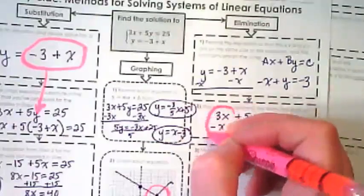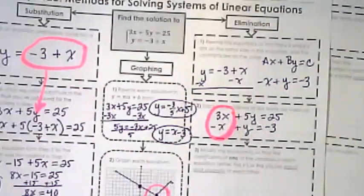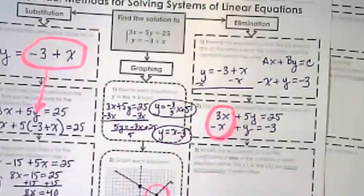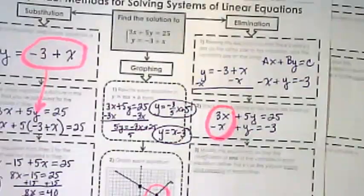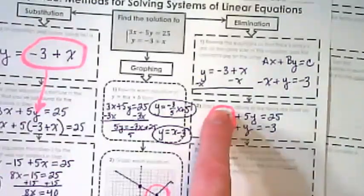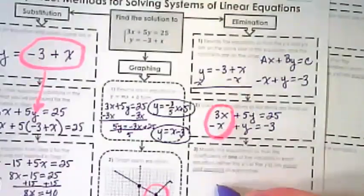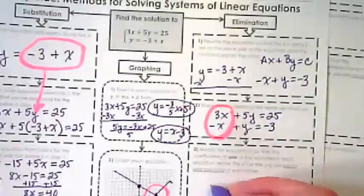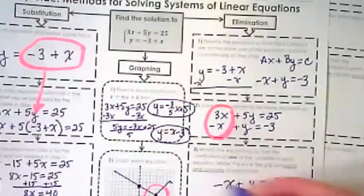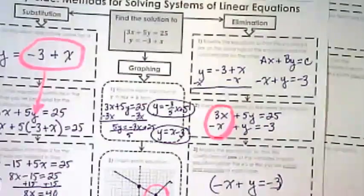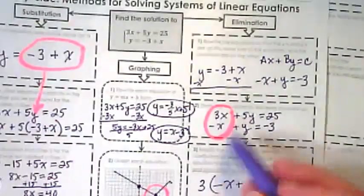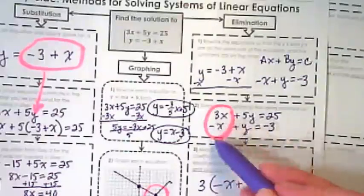I'm going to look at making these two the opposites. Three is a smaller number to work with than five, and this is already negative, and this is already positive. So in our next step, it says to modify the equation so that we get our opposites. I'm going to rewrite this by multiplying it by positive 3 because I want to turn this into a negative 3.